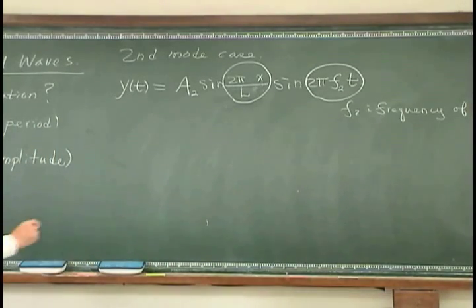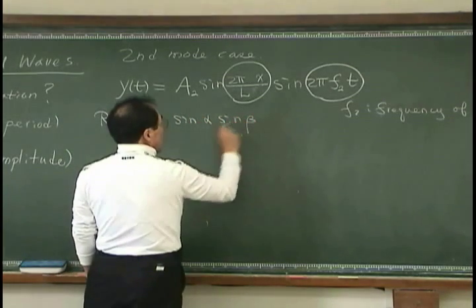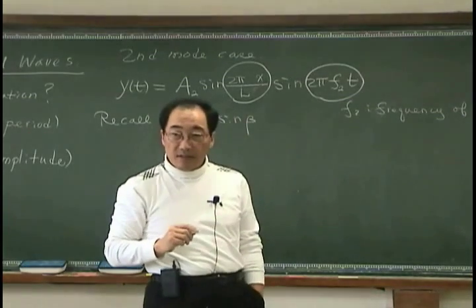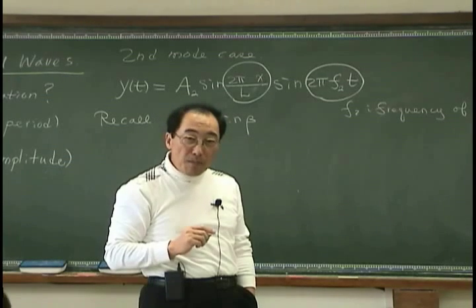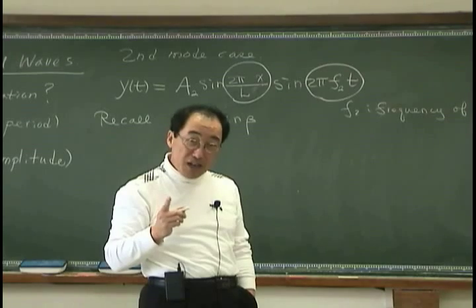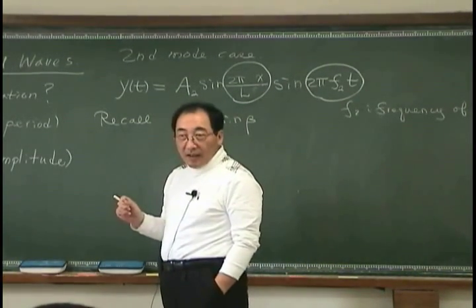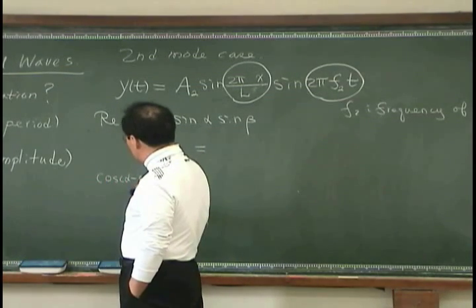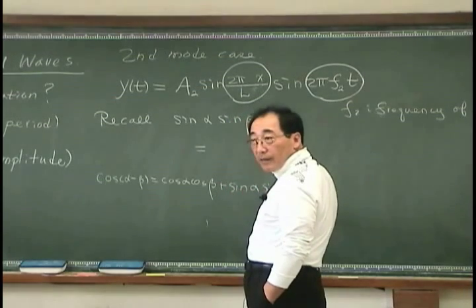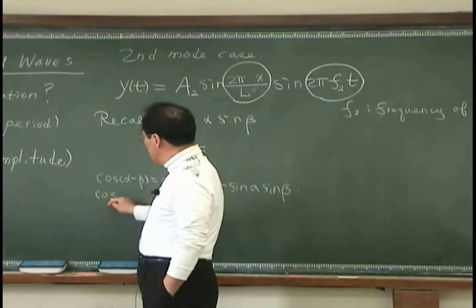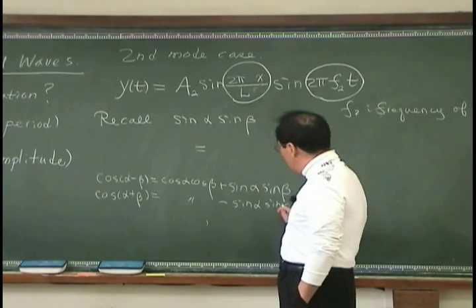And recall that sine α sine β can be written by some sine or cosine function, that is α minus β, α plus β. Right? You guys remember it. I don't remember. How to use it? Cosine(α - β) is cos α cos β plus sin α sin β. Right? And cosine(α + β) is the same and minus sin α sin β.